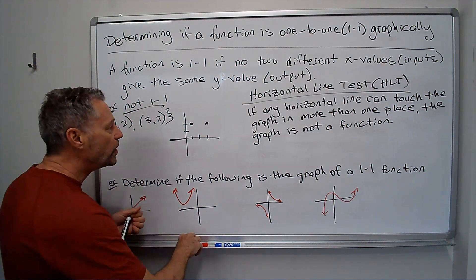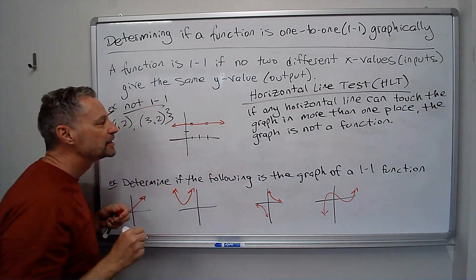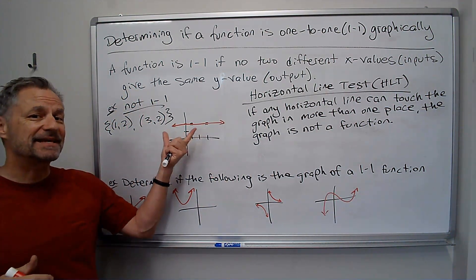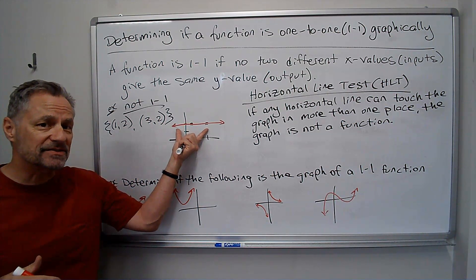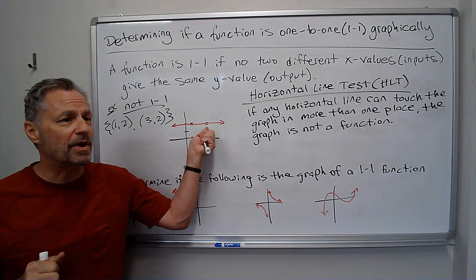Notice those two points, I can draw a horizontal line and it'll go through those two points. So any time I have a horizontal line that can touch the graph in more than one place, it's not going to be one-to-one because I would have two different x-values with the same y-value.